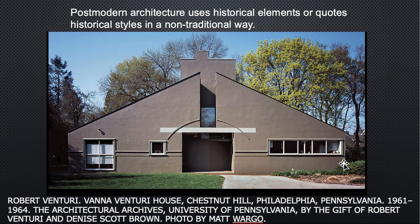This is one of the very first postmodern buildings, designed by Robert Venturi. It's kind of house-shaped — the shape a child would draw — with a pitched roof, a rectangular bottom, and a triangular pitched roof above. There are other things that simulate traditional style, like a form that could be a chimney but isn't, and an arch used not structurally but as a decorative element. That kind of illustrates what postmodern architecture is about.